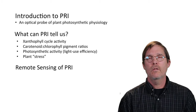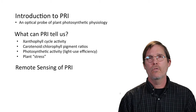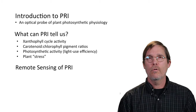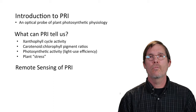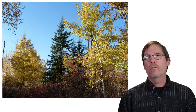The talk will cover what PRI can tell us: it can tell us about the xanthophyll cycle, about relative amounts of carotenoid and chlorophyll pigments, and about photosynthetic activity and plant stress under a variety of conditions. I'll give examples of those and end with the theme of remote sensing of PRI.